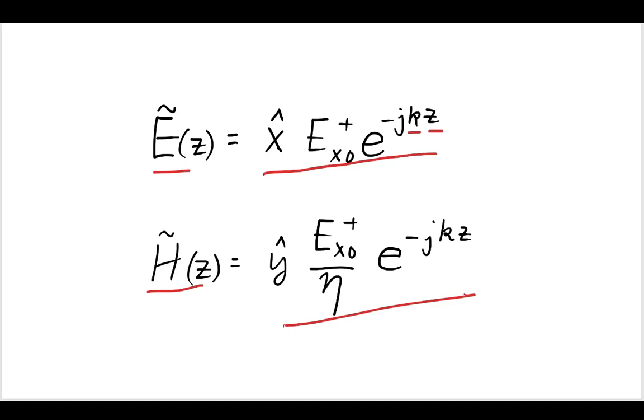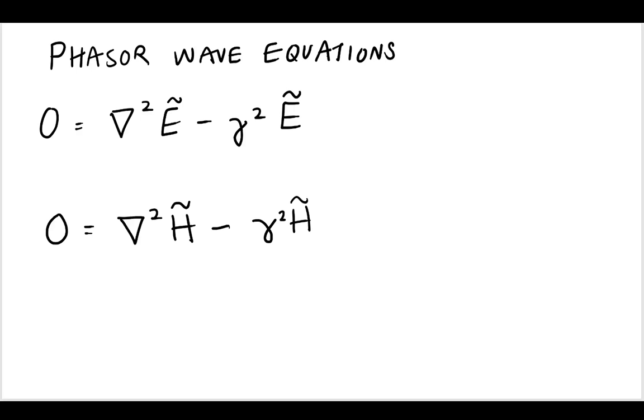In order to understand this video series, you must understand the way that we derive these two phasor wave equations. Now we can see that these are the phasor wave equations for the electric field and the magnetic field. If these are unfamiliar to you, please go back and review the previous video series in which we derived these.